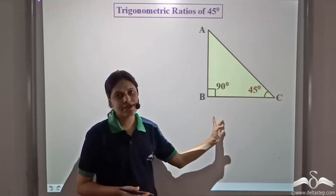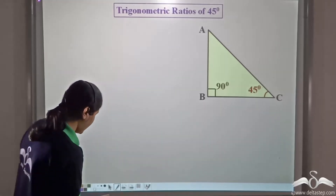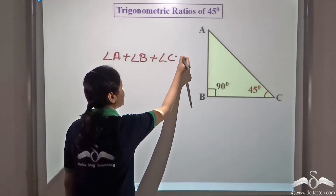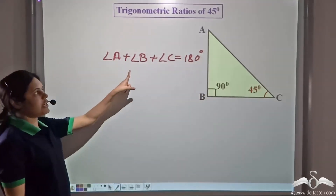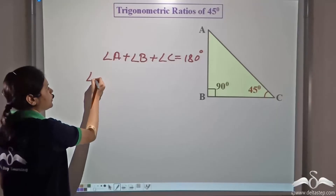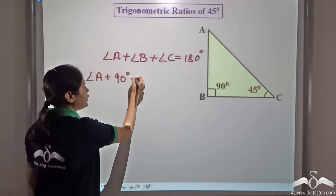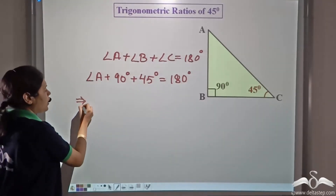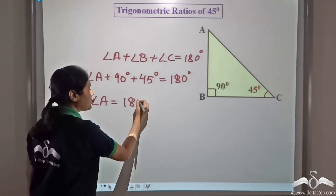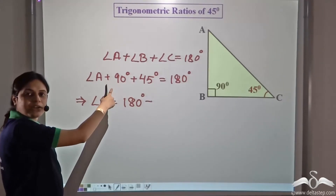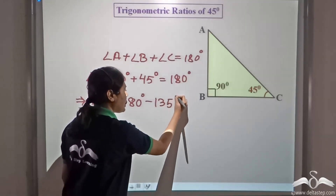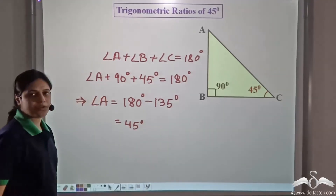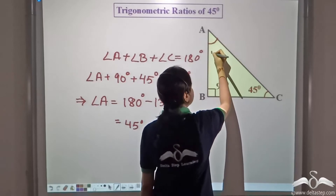We know that the sum of all the angles in a triangle is equal to 180 degrees. So, angle A plus angle B plus angle C equals 180 degrees. We already know angle B and angle C, so angle A plus 90 degrees plus 45 degrees equals 180 degrees, giving angle A equal to 180 minus 135, which is 45 degrees.